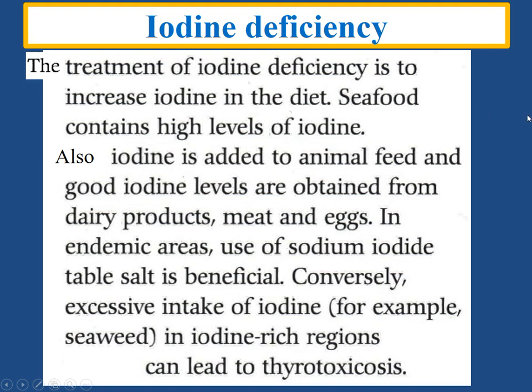The treatment of iodine deficiency is to increase iodine in the diet. Seafood contains high levels of iodine; iodine is also added to animal feed, and good iodine levels are obtained from dairy products, meat, and eggs. In endemic areas, use of sodium or potassium iodide tablets and iodized table salt is beneficial. Conversely, excessive intake of iodine — for example, seaweed in iodine-rich regions — can lead to thyrotoxic causes.